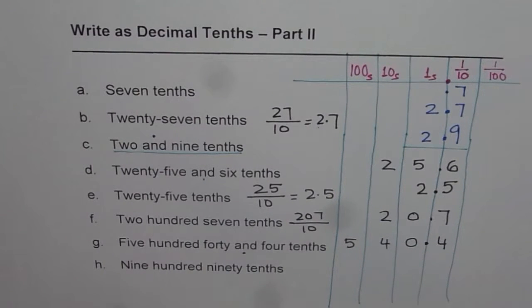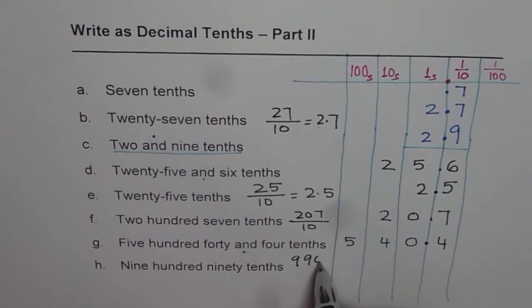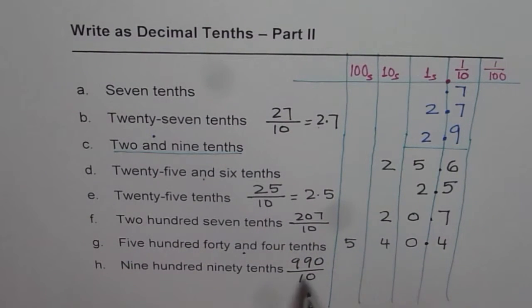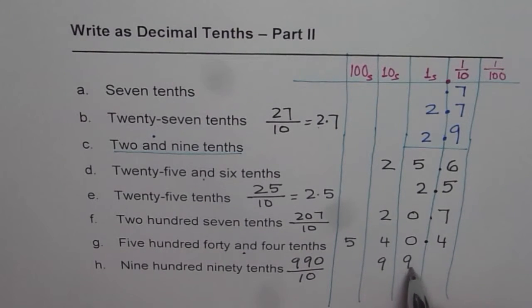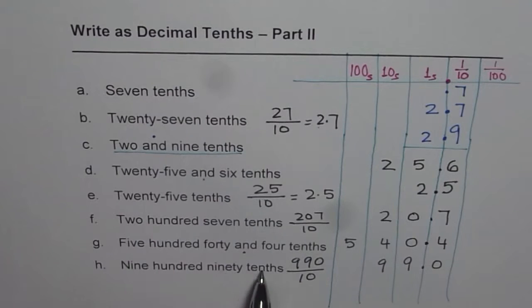But the last one is kind of tricky. Nine hundred ninety tenths. We are saying 990 tenths, so it should be 99.0. Nine hundred ninety tenths. Does it make sense to you?